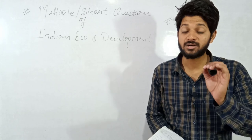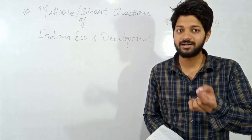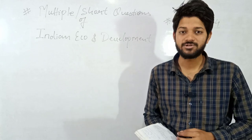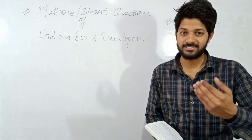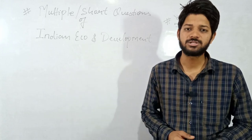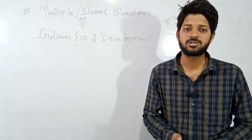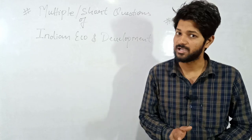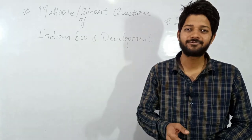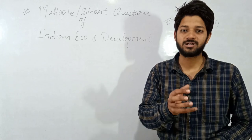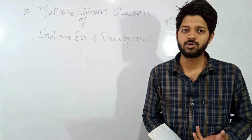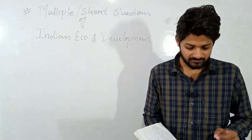The fourth question: Planning Commission was set up in which year? The answer will be 1950. Related to this: the First Five-Year Plan in India was implemented in 1951. Also, the president or chairperson of the Planning Commission is always the current Prime Minister of India. India adopted the concept of five-year planning from Russia, that is the USSR.